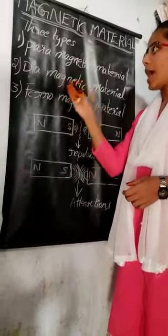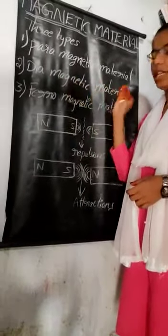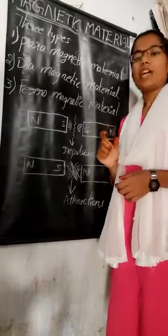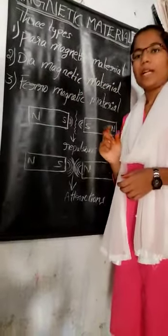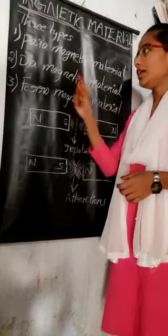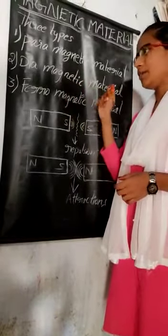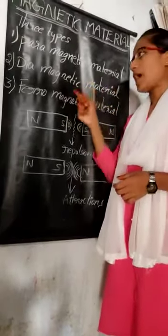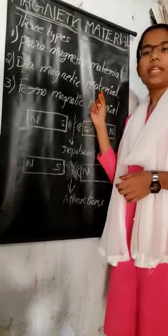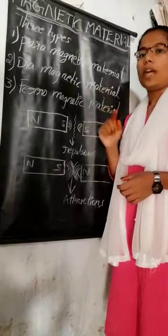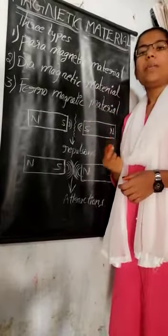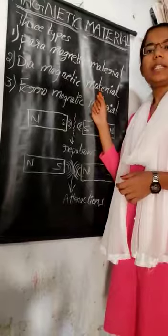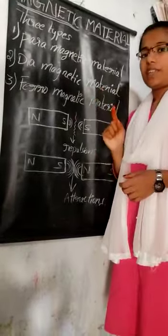And the next one, diamagnetic material. The material which are weakly repelled by a magnet is called diamagnetic material. The example of diamagnetic material is gold and silver. And the permeability of diamagnetic material is negative.